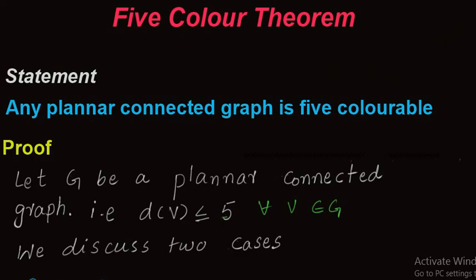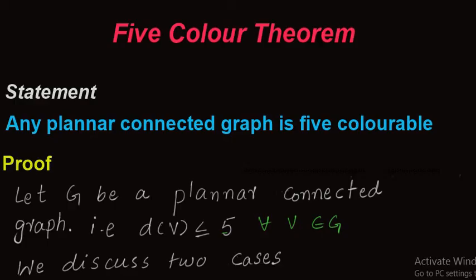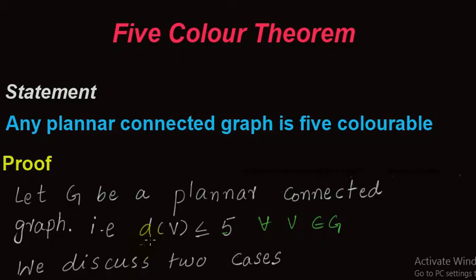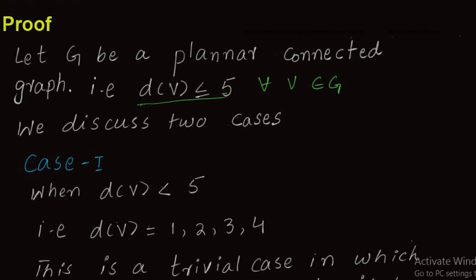Welcome students. Today's topic is the Five Color Theorem, an important theorem of graph theory. The theorem states that any planar connected graph is five colorable — that is, the maximum number of colors needed to color a planar connected graph is five. A planar graph is one in which the maximum degree of a vertex is five, so the degree is always less than or equal to five. Let G be a planar connected graph; then the degree of v is less than or equal to five for all v belonging to G.